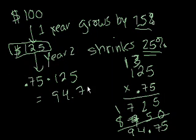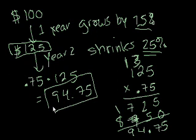So it's interesting. If I start with $100, and it grows by 25%, and then it shrinks by 25%, I end up with less than I started with. And I want you to think about why that happens. Because 25% on 100 is the amount that I'm gaining. That's a smaller number than the amount that I'm losing. I'm losing 25% on 125.